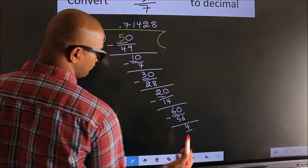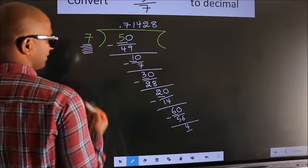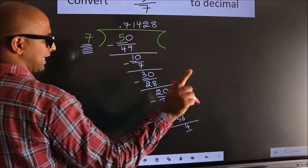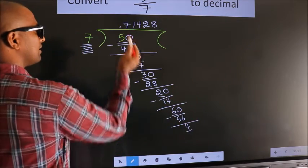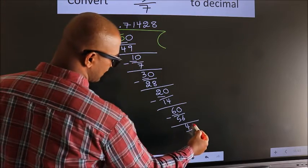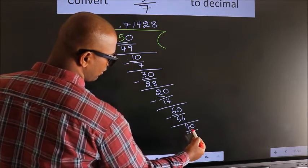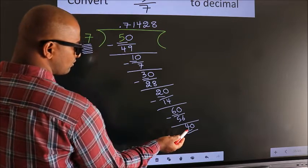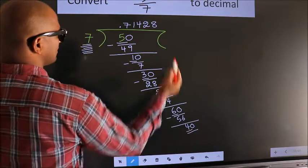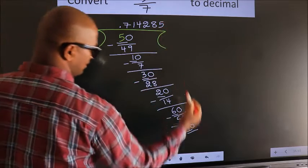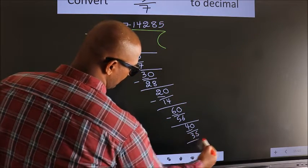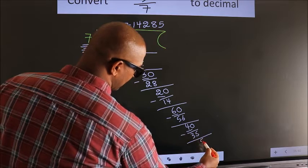Here we have 4, here 7. 4 is smaller than 7. And we already have the decimal, so we can directly take 0. So, 40. A number close to 40 in the 7 times table is 7 fives: 35. Now we subtract. We get 5.